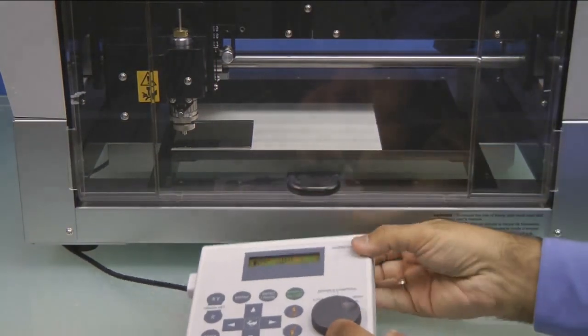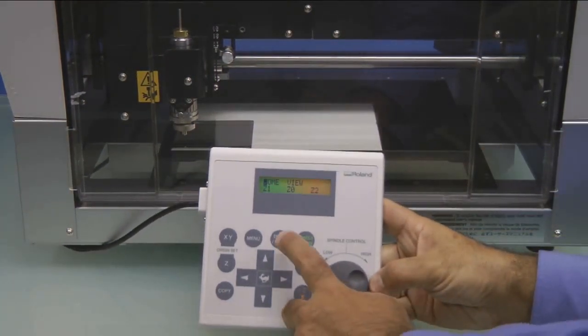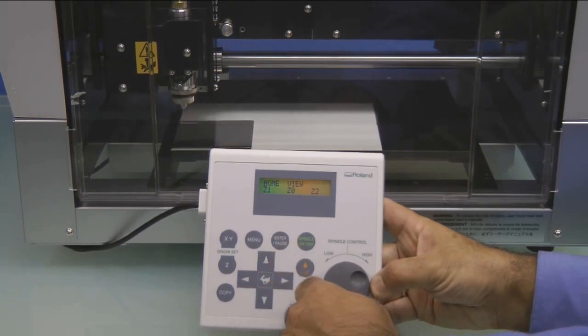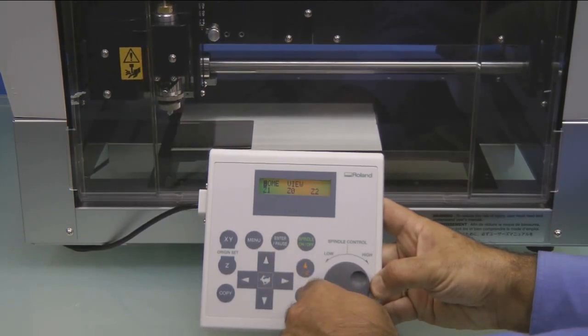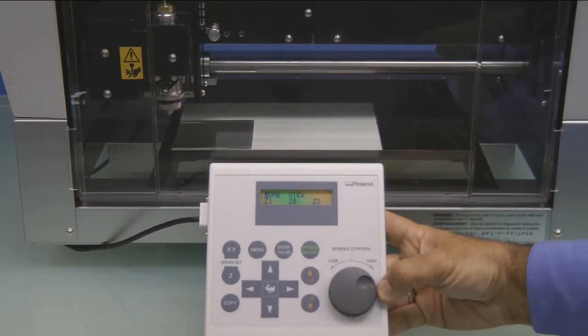Press the Z plus to clear the material. At this point, close the cover and press the Menu key until you see the Home view, Z1, Z0, Z2 menu. With the cursor on Home, press Enter. Now we are ready to engrave.